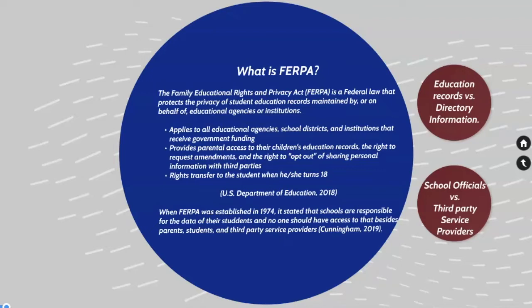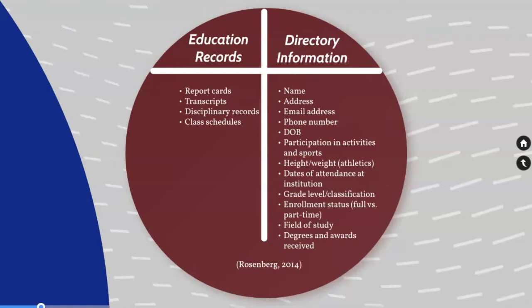In order to better understand what FERPA covers, let's first discuss the differences between students' education records and directory information. Education records include information that is maintained by the school and that is directly related to a student. Directory information is more basic and is not considered harmful if it is disclosed. Some examples of education records include report cards, transcripts, disciplinary records, and class schedules.